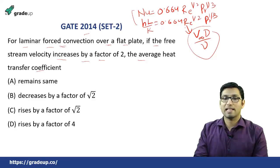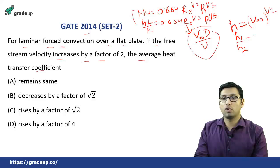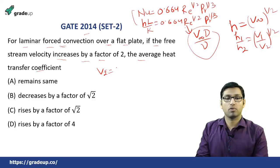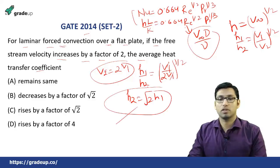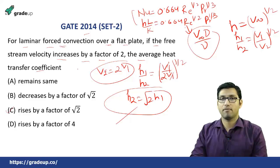We can say that H1/H2 = (V1/V2)^(1/2). Since V2 = 2V1, after substituting, H1/H2 = (V1/2V1)^(1/2). Therefore H2 = √2 × H1. So the correct answer is option C: the average heat transfer coefficient will rise by a factor of root 2 if the free stream velocity increases by a factor of 2.